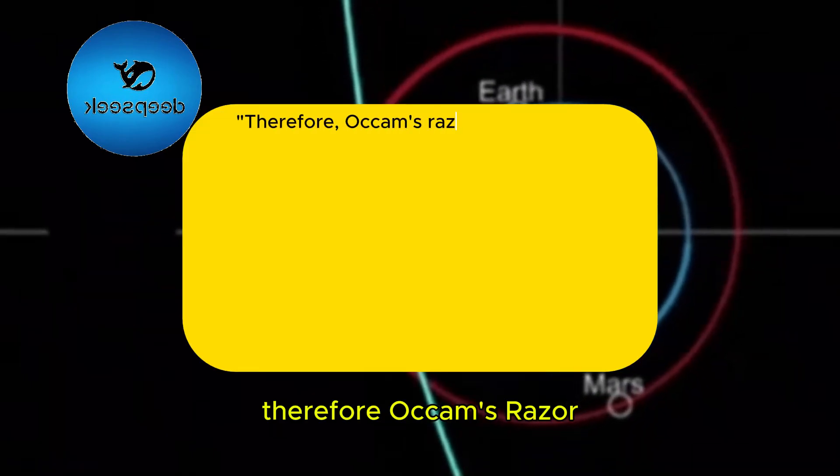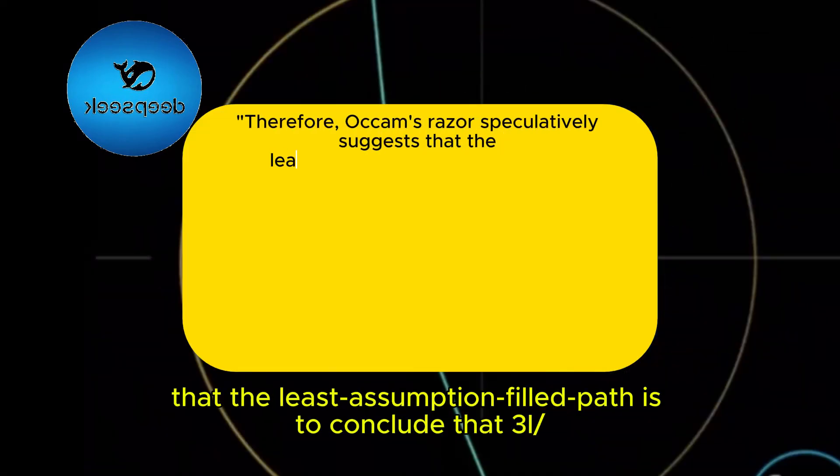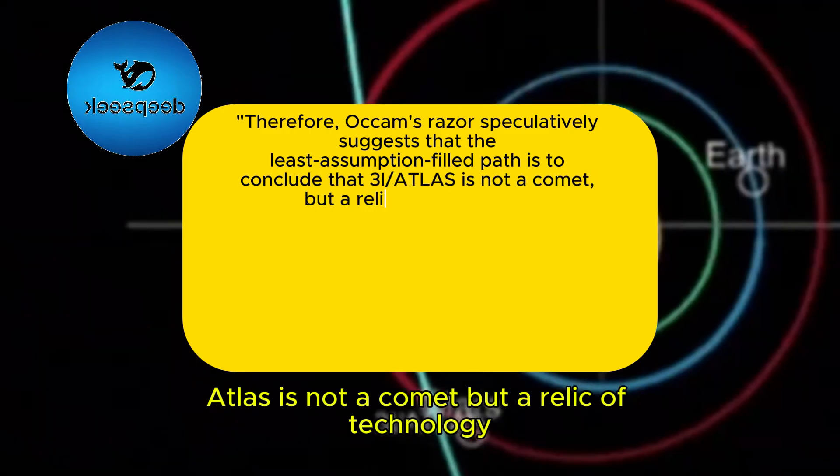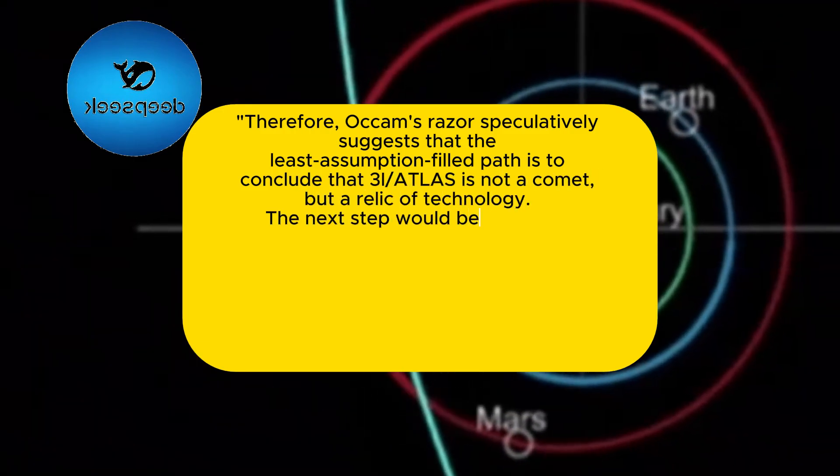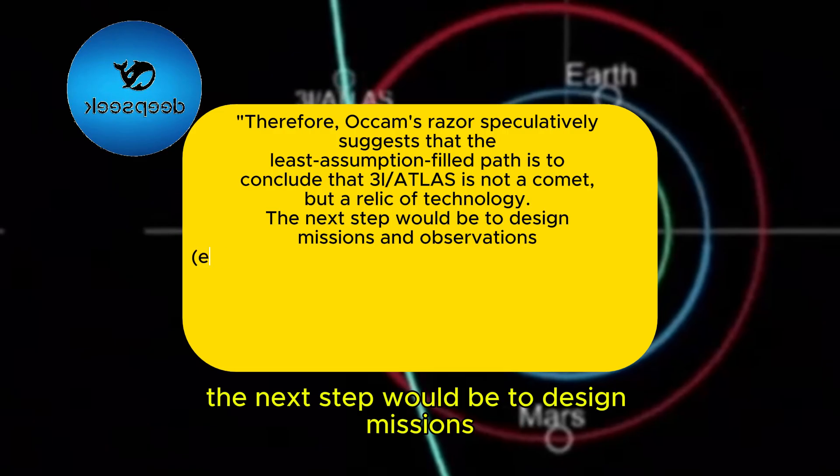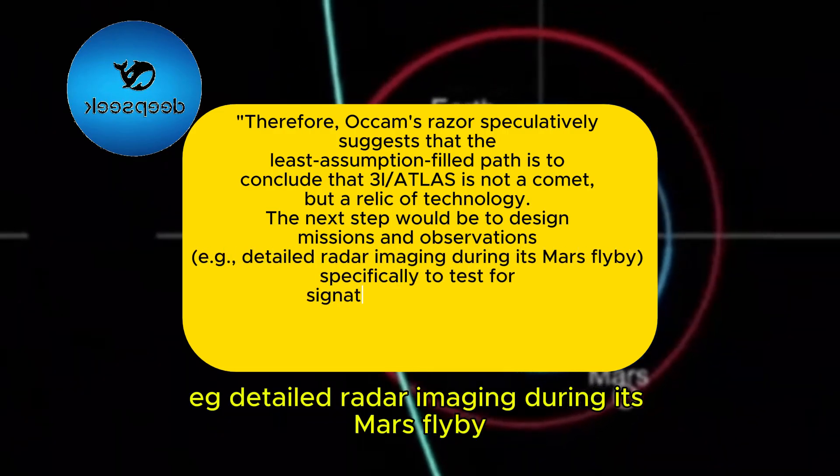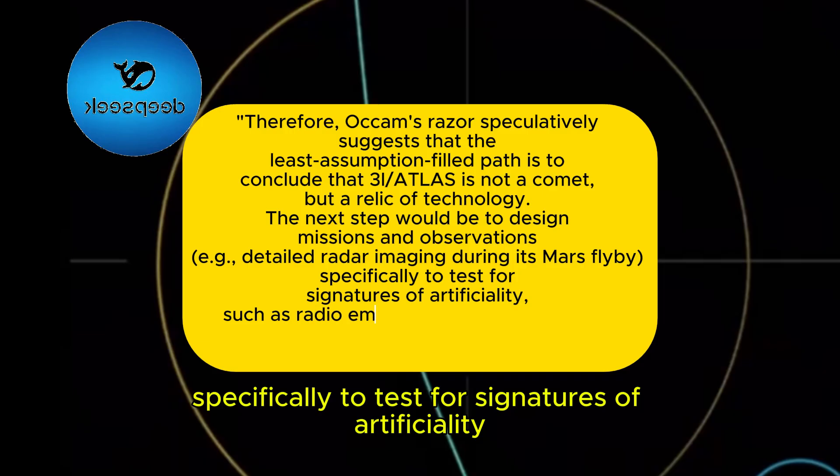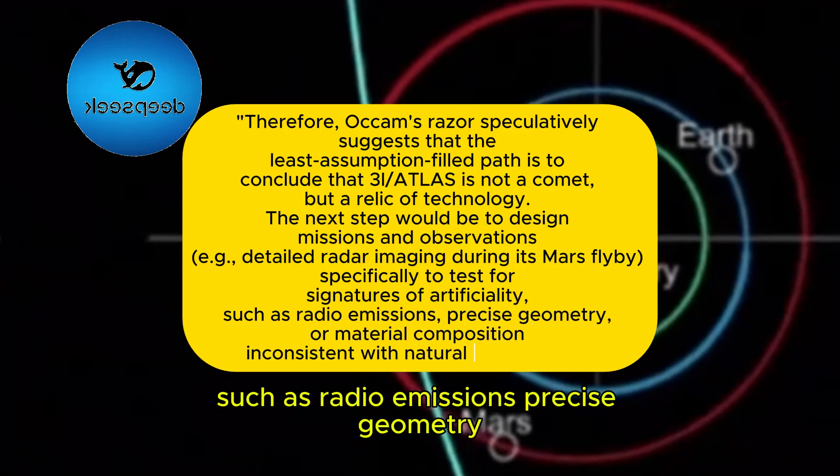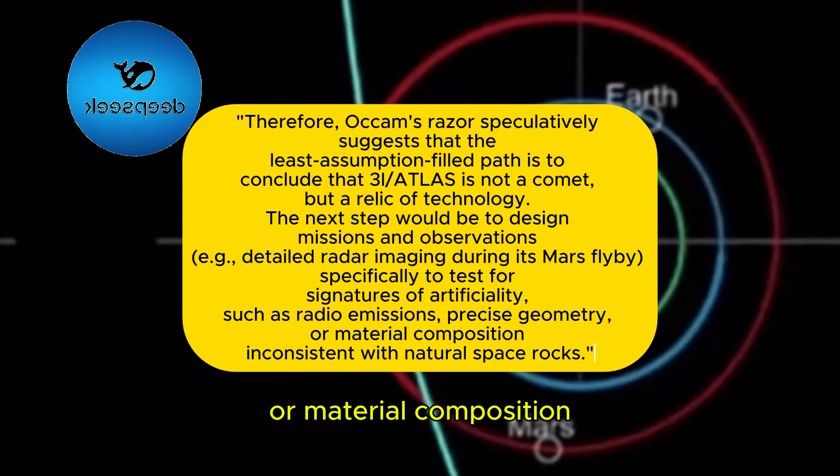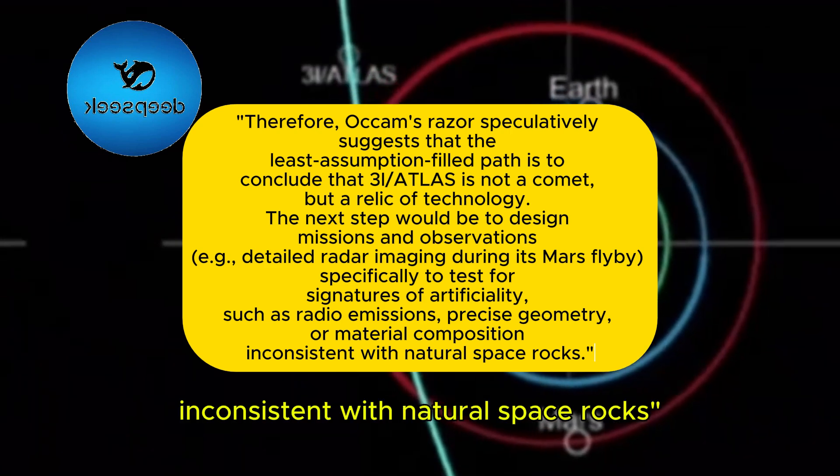Therefore, Occam's Razor speculatively suggests that the least assumption-filled path is to conclude that 3I Atlas is not a comet, but a relic of technology. The next step would be to design missions and observations, e.g., detailed radar imaging during its Mars flyby, specifically to test for signatures of artificiality, such as radio emissions, precise geometry, or material composition inconsistent with natural space rocks.